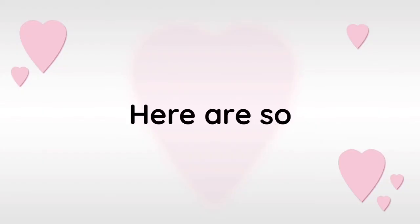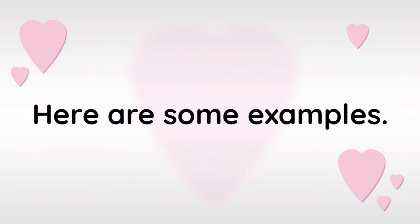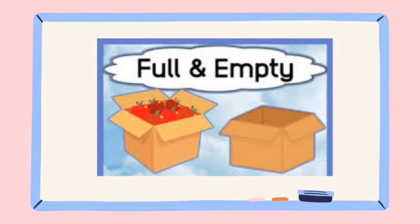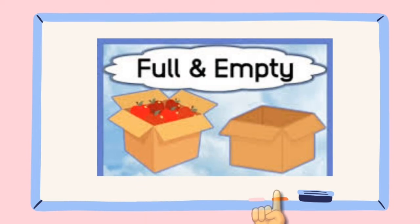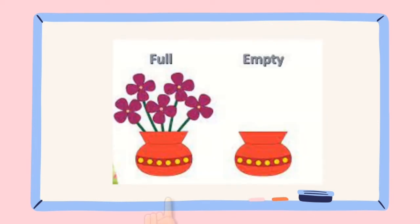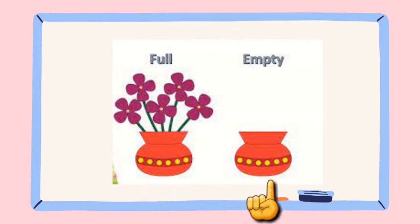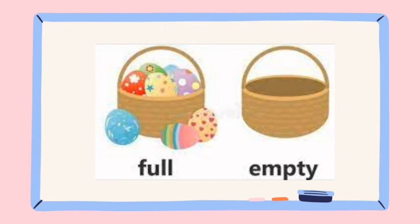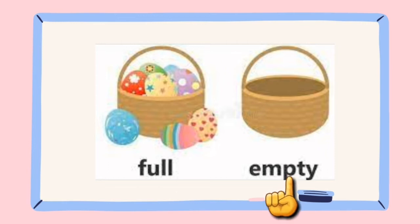Here are some examples. First, the first box is full while the second box is empty. Second example, the vase on the left is full while the vase on the right is empty. Third example, the basket on the left is full while the basket on the right is empty.